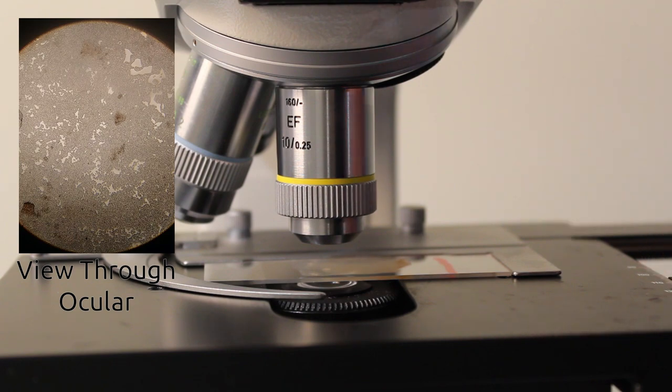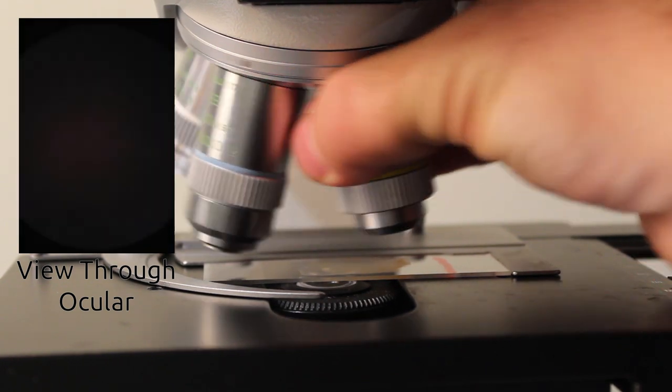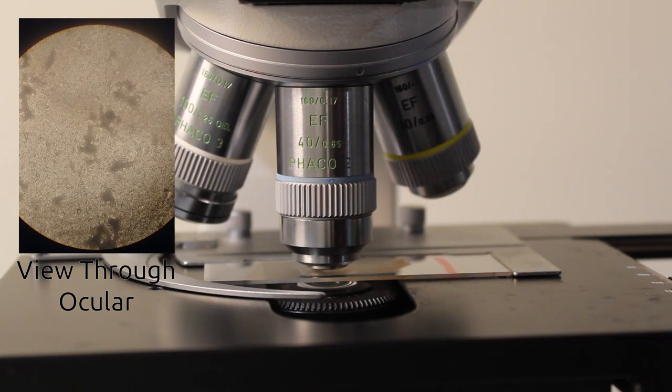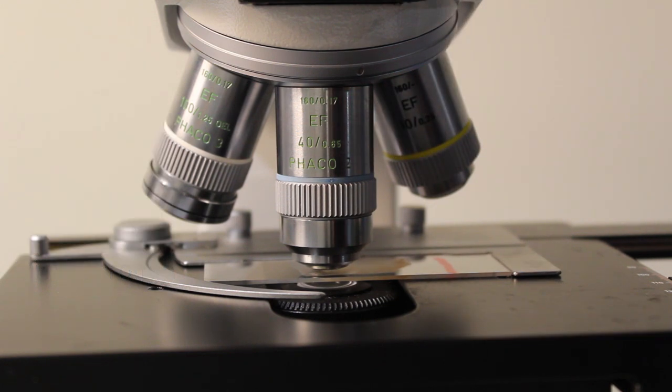Most microscopes are set up to be parfocal and what that means is if we rotate our lens from one to the next, the next lens should automatically be in focus or only require very minor tweaks using the fine focus knob.